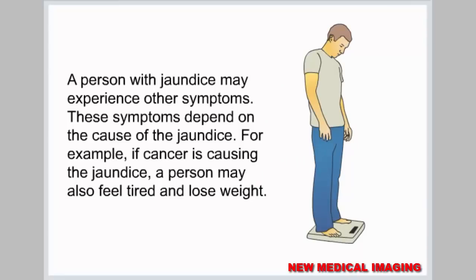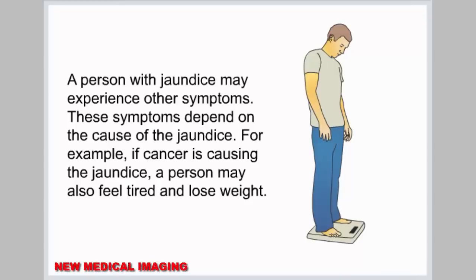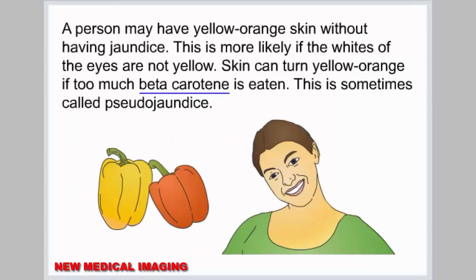A person with jaundice may experience other symptoms depending on the cause of the jaundice. For example, if cancer is causing the jaundice, a person may also feel tired and lose weight. A person may have yellow-orange skin without having jaundice — this is more likely if the whites of the eyes are not yellow. Skin can turn yellow-orange if too much beta-carotene is eaten, which is sometimes called pseudo-jaundice.